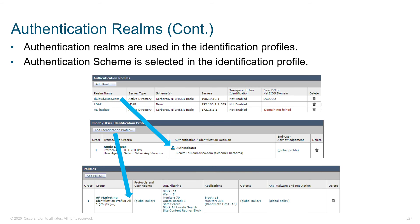Authentication realms are leveraged within identification profiles. For example, when we see the marketing group, we authenticate them via one realm. If we see sales, and all sales accounts are in a different database, we use a different realm. In addition to having different policies for each group — URL filtering, anti-malware filtering, DLP — we can also have different authentication realms or back-ends for each.